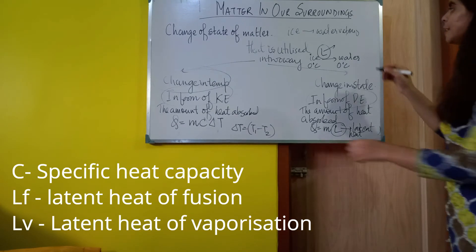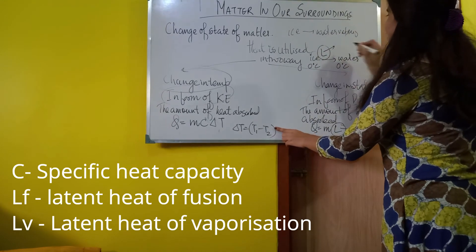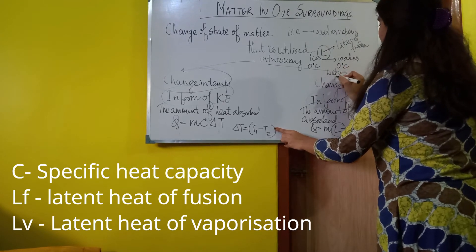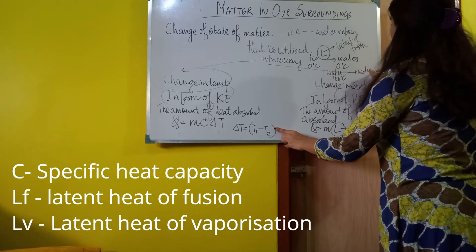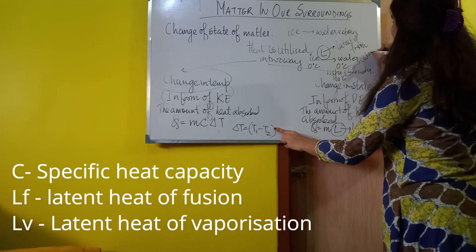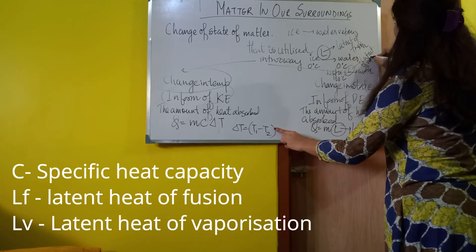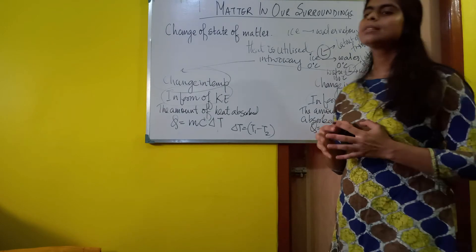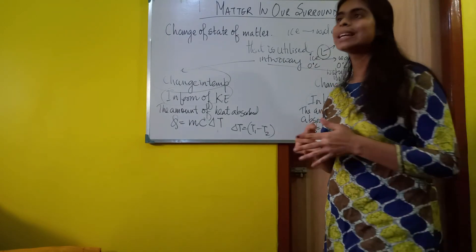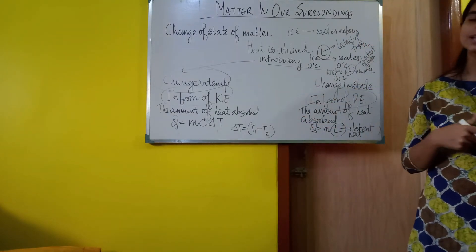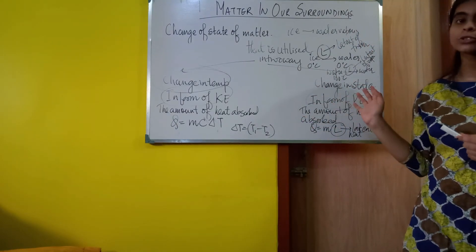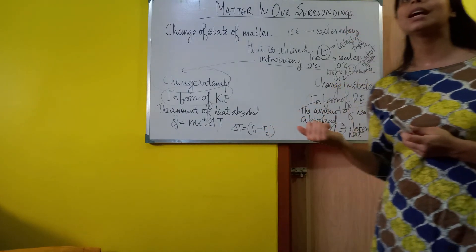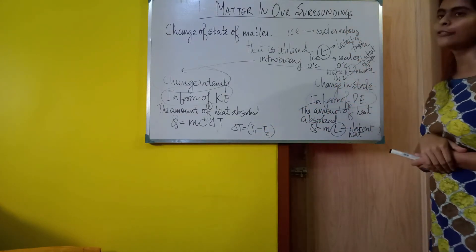When solid is converting into liquid, the latent heat involved is called latent heat of fusion. Similarly, when water at 100 degrees is converting into water vapor, the latent heat required is called latent heat of vaporization. The latent heat of vaporization is the amount of heat required to convert one kilogram of liquid to gas. The latent heat of fusion is the amount of heat required to convert one kilogram of solid to liquid.